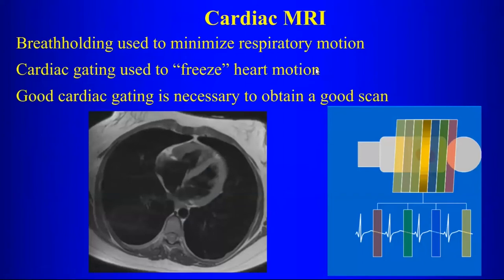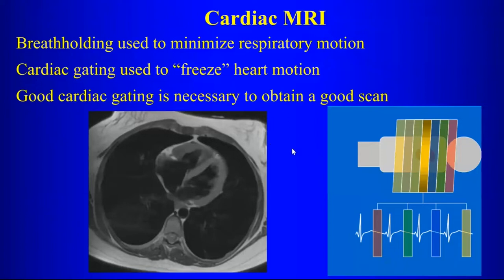One of the most important things whenever you're doing cardiac imaging is that because we're trying to image a moving structure like the heart, we need to minimize motion. For breathing motion, we usually use breath holding — we ask the patient to hold their breath for the sequence. For the heart motion itself, we use cardiac gating to freeze the heart motion. If you don't have good cardiac gating, you'll have a lot of artifacts on your images and not a very diagnostic study.